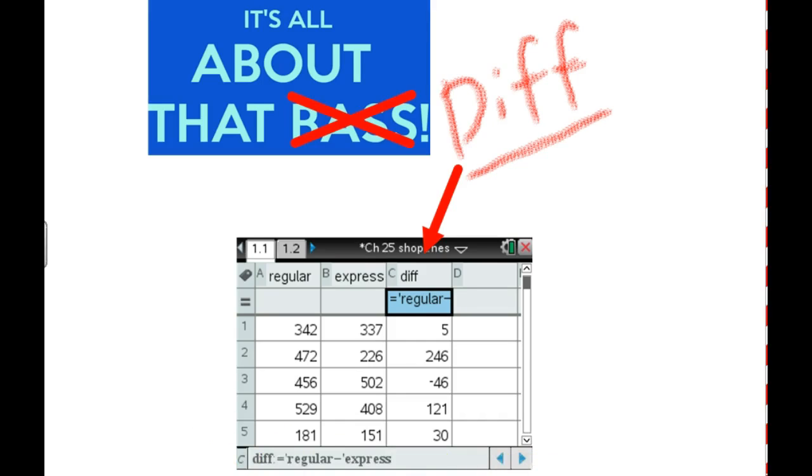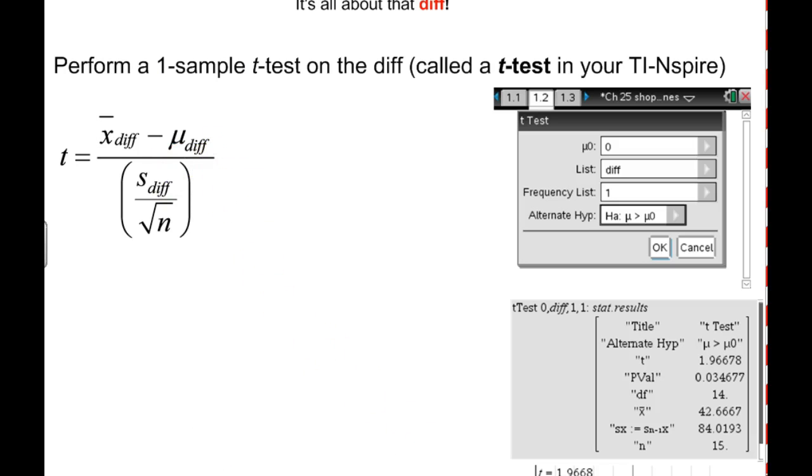And it's a good idea to write that down because they like to see. The AP College Board really likes to see some of this work here. So they want to see you've done the x bar of the diff. So x bar is 42.6 minus 0. Again, that's all we call the 0. And then the standard deviation. The standard error here would be 84.019 divided by the square root of n. In case you didn't follow what n was, n is 15. It's listed there. And then you get your value. We can just copy the value from here or check it if we want. It would be 1.966.